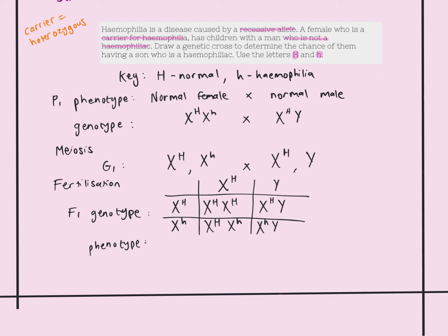The tricky part with sex-linked traits is determining the phenotype. These two children are daughters — you can see that from the XX genotype — so we now include gender in the phenotype. Both daughters have a capital H; one has two capital Hs and one has capital H and small h. Because hemophilia is caused by the recessive allele, the capital H masks the hemophilia allele in the second daughter — she is still phenotypically normal but genotypically a carrier. So we have two normal females.